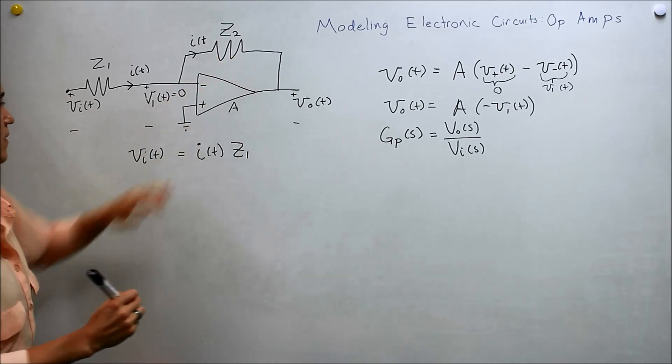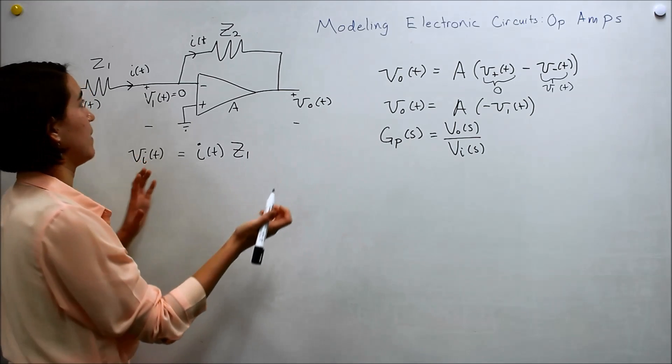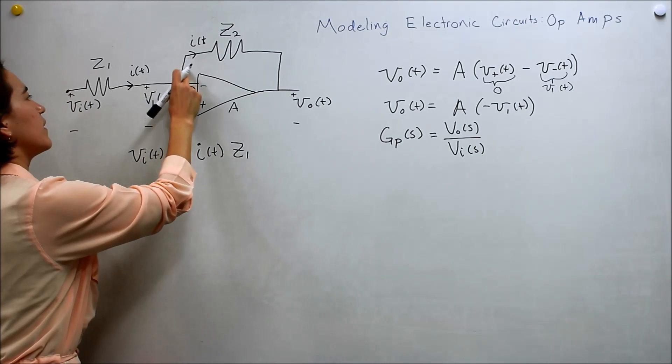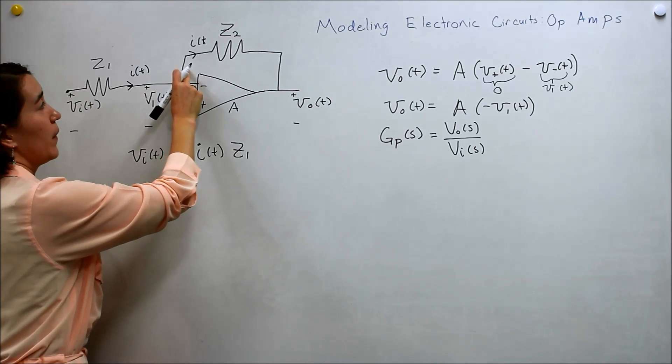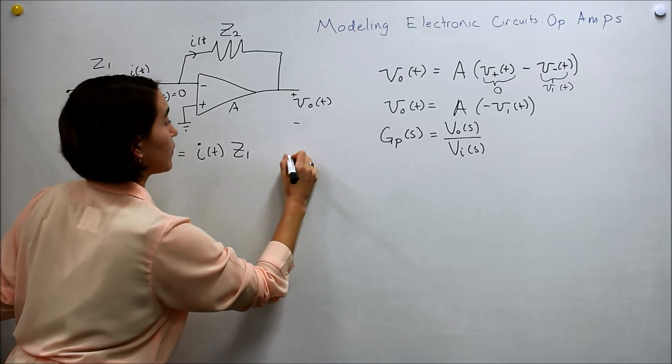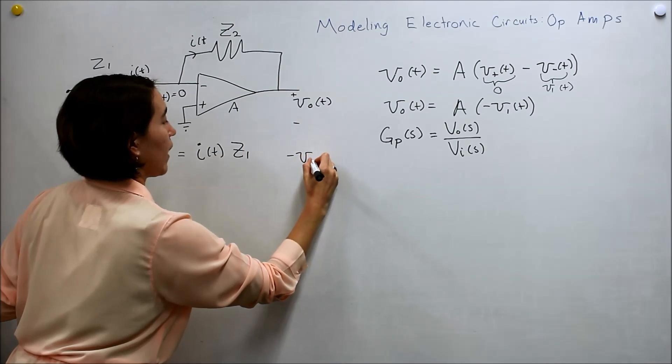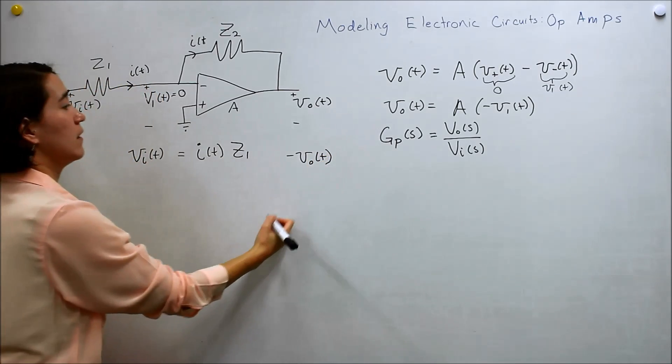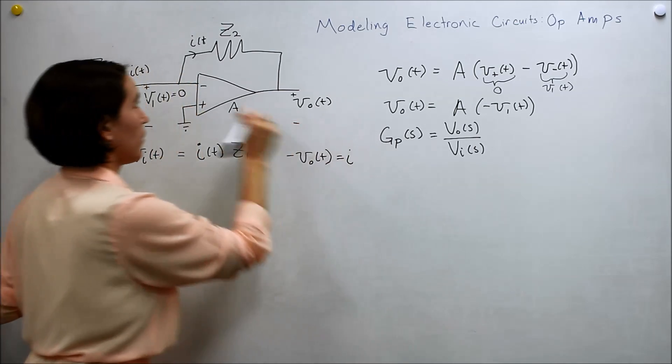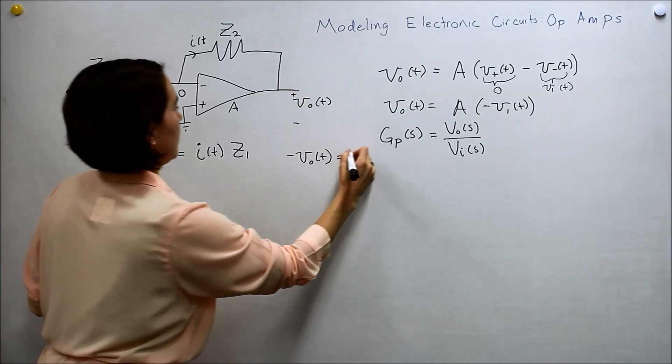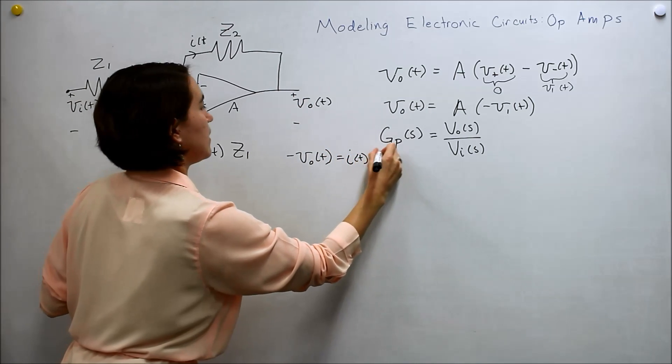What about this resistance? Well, we do the same thing. Now we have this voltage, which is zero, minus V out. So we have a negative V out of T equals I. And remember, this is the same current of T. And Z2.